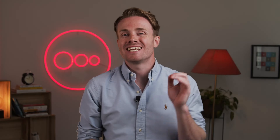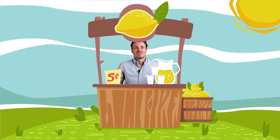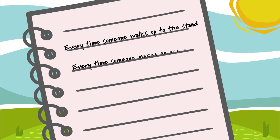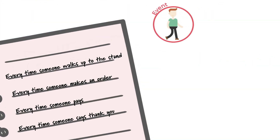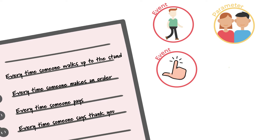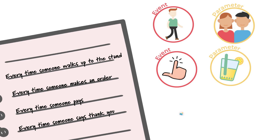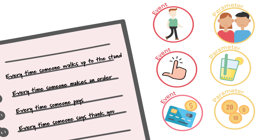Now it's important to explain parameters — don't skip this, as it's key for understanding events in GA4. Simply put, parameters are other pieces of information collected with an event. Going back to the lemonade stand: we collected four events. Now with parameters, for every time someone walks up we also collect their gender — that's a parameter. For every order, we collect how many lemonades they ordered. For every payment, we note the denomination of money used — 20s, 10s, or 5s. Parameters collect extra information available for analysis.